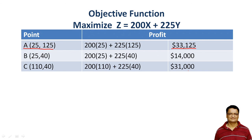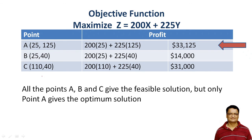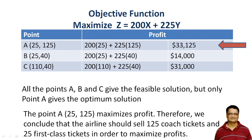Evaluating the three vertices: point A gives the maximum value, while points B and C give lower values. All points A, B, and C are feasible solutions, but only point A gives the optimum solution. Therefore, the airline should sell 25 first class tickets and 125 coach tickets to maximize profit, and that maximum profit is given by this value.